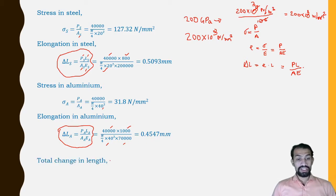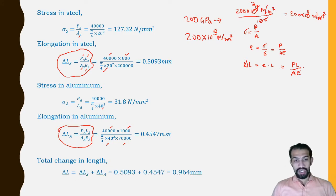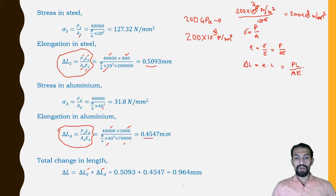Calculating the total change in length: ΔL = Δ_s + Δ_a. Substituting the calculated values of 0.5093 mm and 0.4547 mm, the total change in length is 0.964 mm.